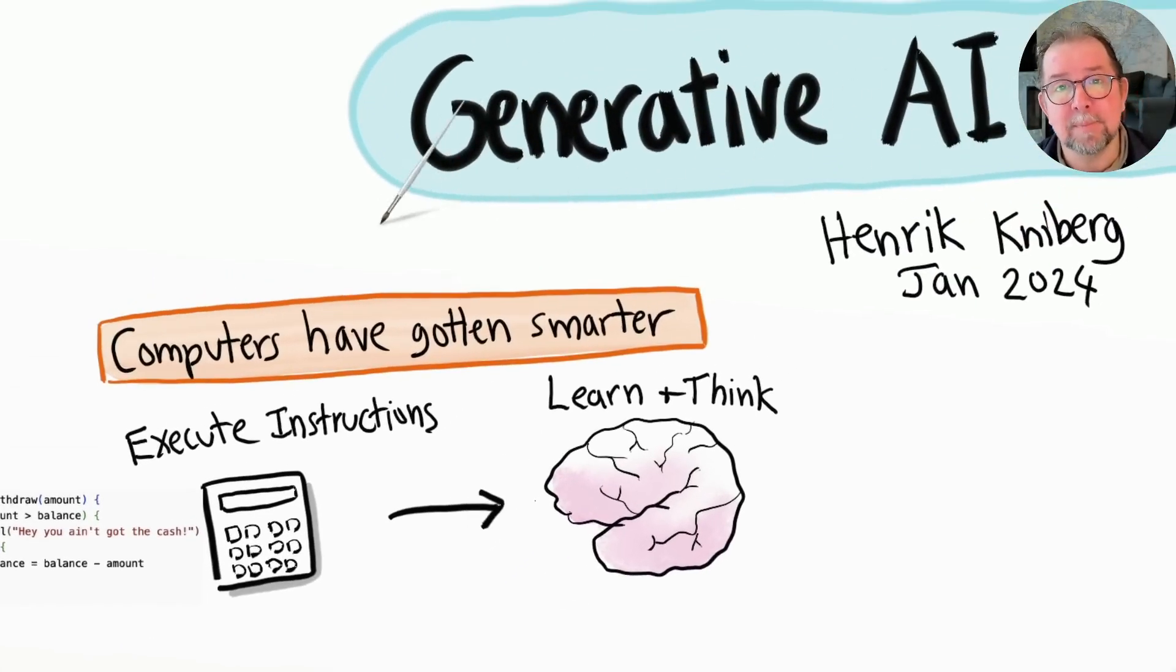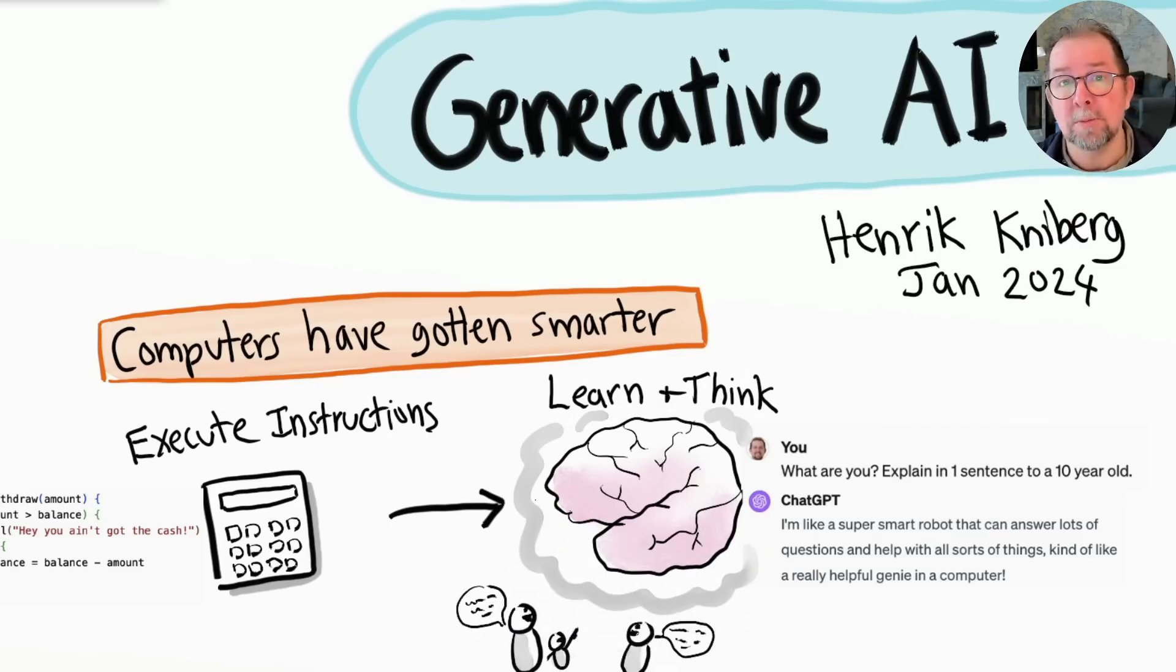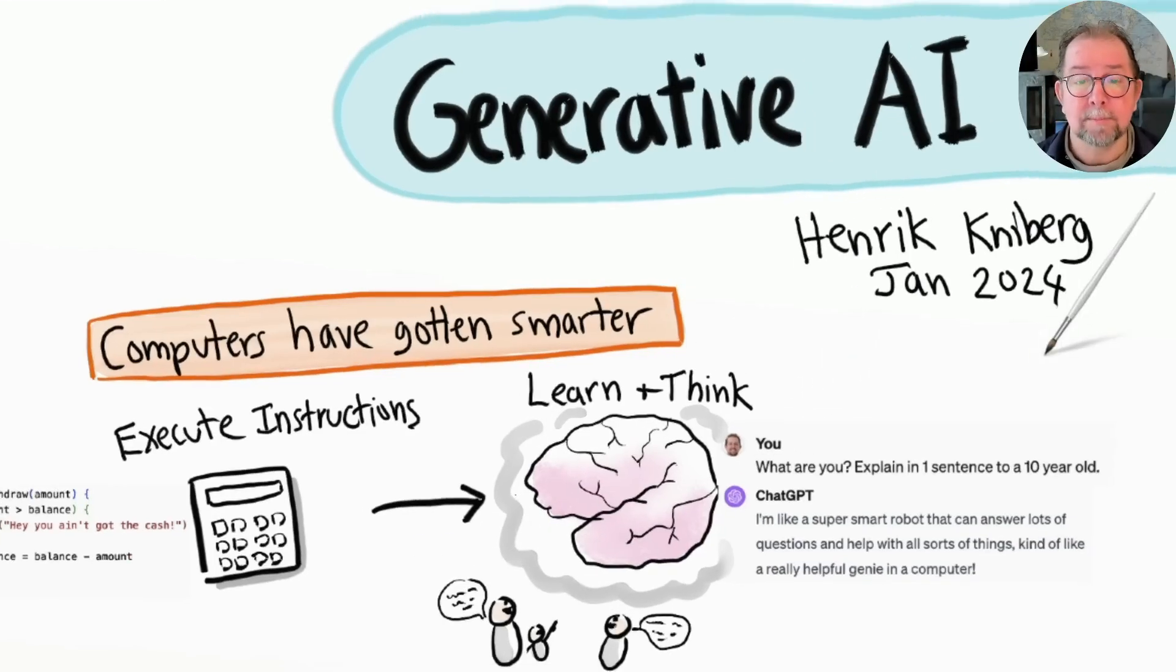We call this technology generative AI, and you may have encountered it already through products like ChatGPT. Basically, intelligence is now available as a service, kind of like a giant brain floating in the sky that anyone can talk to. It's not perfect, but it is surprisingly capable and it is improving at an exponential rate.